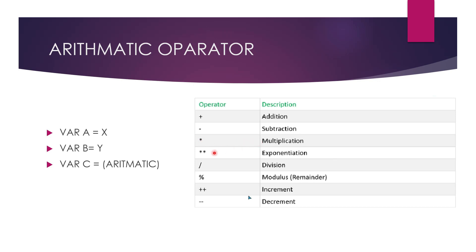Star is for multiplication, double star for exponentiation, forward slash for division, percentage for the modulus remainder, double plus for increment, and double minus for decrement. We are going to use all of these operators practically.